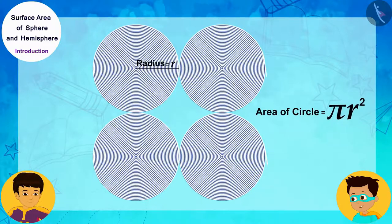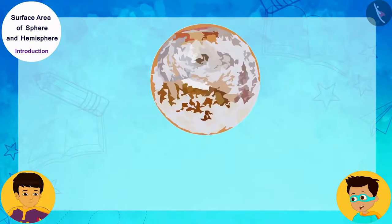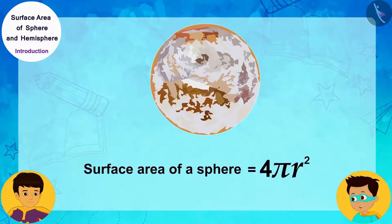Oh, wow, Manas! We found the formula for the surface area of a sphere. The surface area of a sphere is four times pi R square, where R is the radius of the sphere.